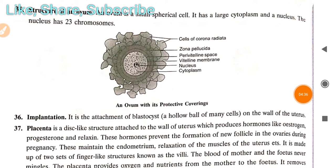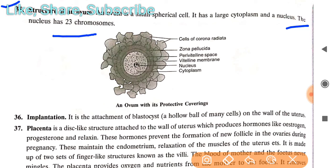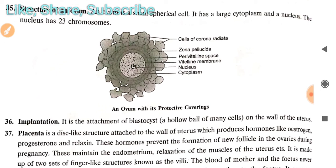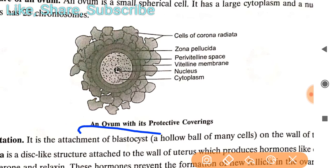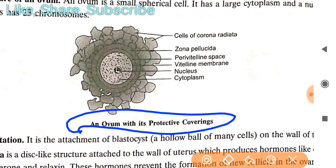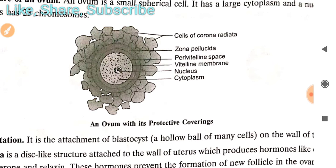The ovum is a small spherical cell with a large cytoplasm and a nucleus containing 23 chromosomes. Looking at its structure with protective coverings: the outermost cells are called corona radiata, followed by zona pellucida. The space just before the main nucleus is called the vitelline space, then the vitelline membrane, then the nucleus within the cytoplasm.